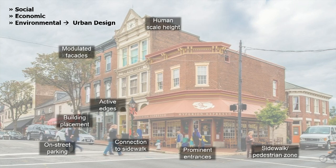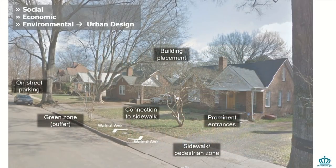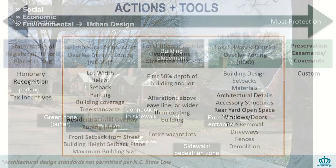This follows up on Erin's presentation on urban design — community character is a result of good urban design, and historic places usually embody the important urban design elements Erin discussed: social, economic, environmental — human scale height, building placement, active edges, on-street parking, clear prominent entrances, sidewalk pedestrian zone. The street in Wesley Heights is in the Wesley Heights Local Historic District, where preservation is protecting a period of Charlotte's history when we were a small textile town — preserving a great environment defined by strong urban design.